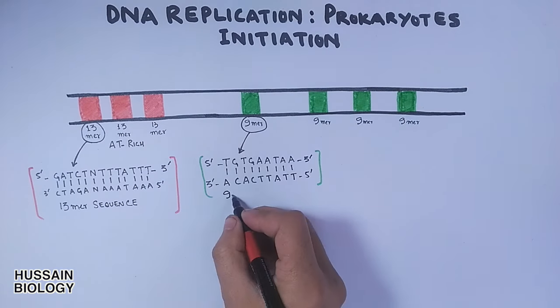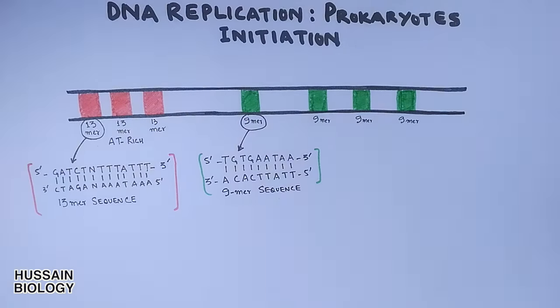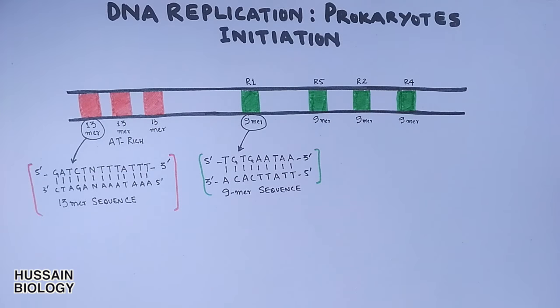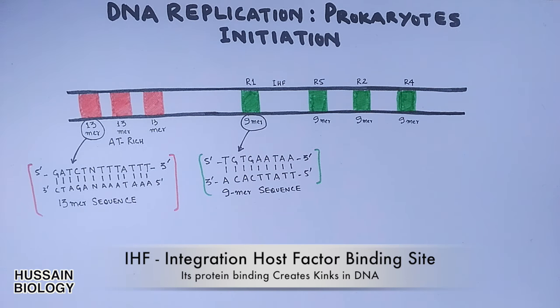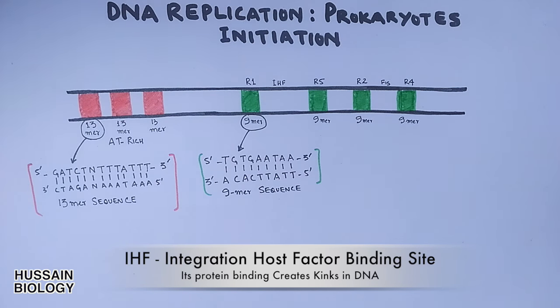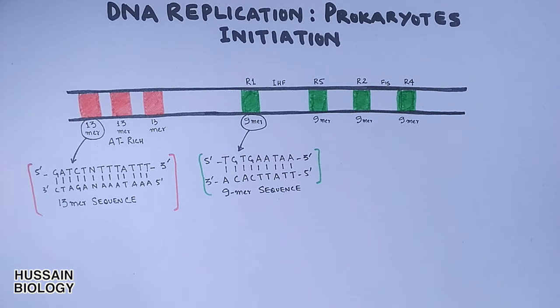We denote these 9mer sequences as R boxes: R1, R5, R2, and R4. Between R1 and R5 box there's an IHF protein binding site, and between R2 and R4 there's a FIS protein binding site. When IHF protein binds to the IHF site, it enhances DNA replication initiation, while FIS protein negatively regulates replication. However, when both IHF and FIS proteins bind together, they together enhance replication.